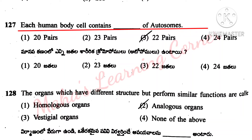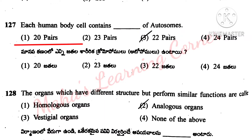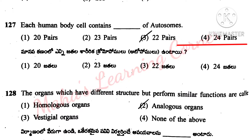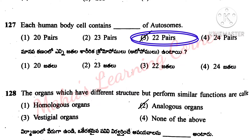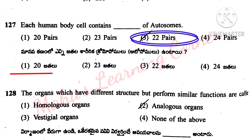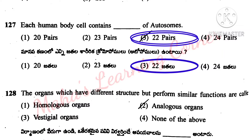Each human body cell contains dash of autosomes. Options: 20 pairs, 23 pairs, 22 pairs, 24 pairs. Correct answer is 22 pairs of autosomes. Correct answer: option 3, 22 pairs.